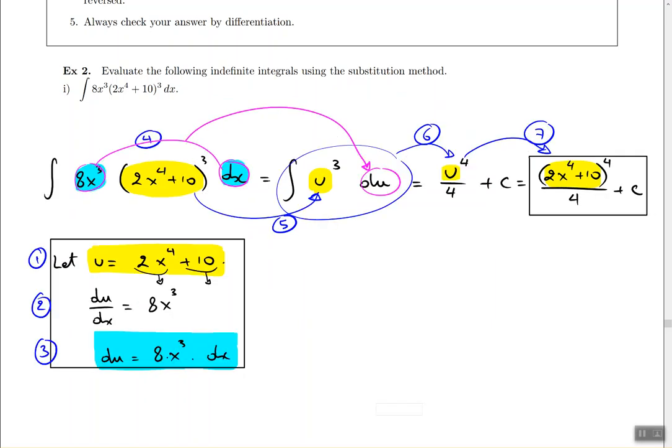So to recap, here's what happened in this problem. Started with step 1: deciding what u is. Then I found the derivative of u. Then I found du by itself by multiplying both sides by dx. So those were steps 1, 2, 3. Then I go to the original problem and replace 8x³ and dx with du. That was step 4.